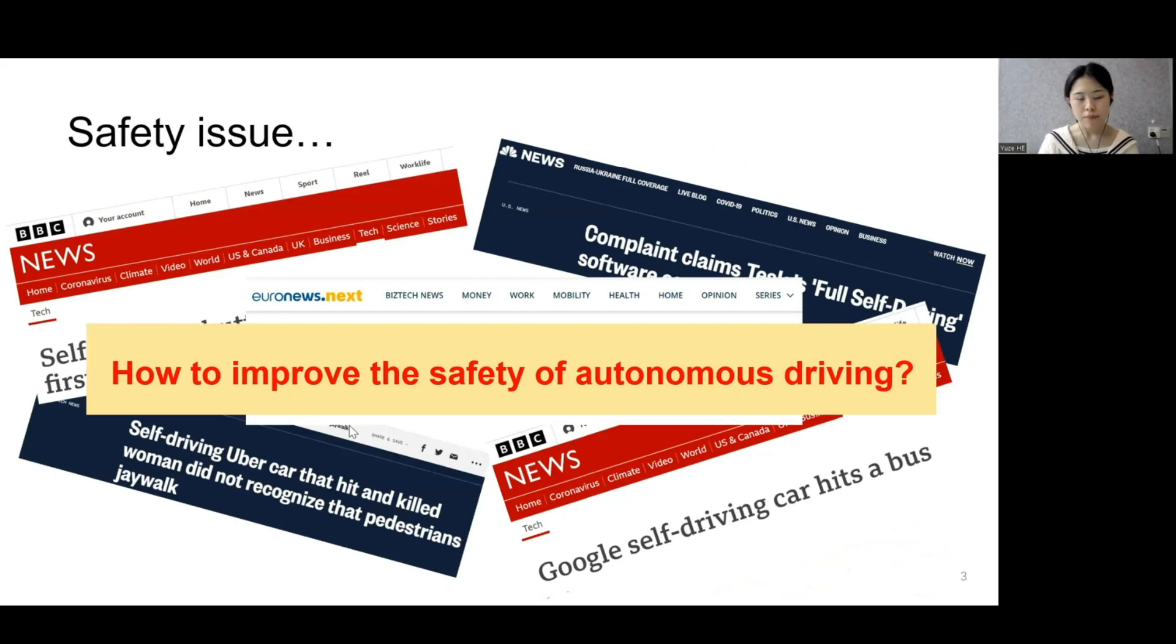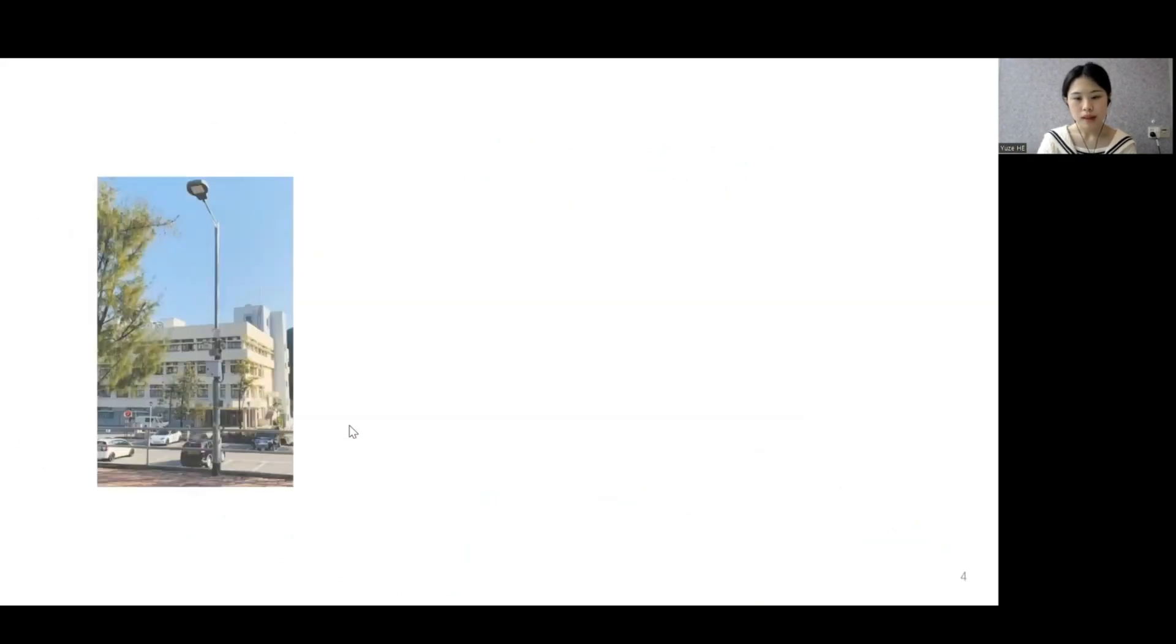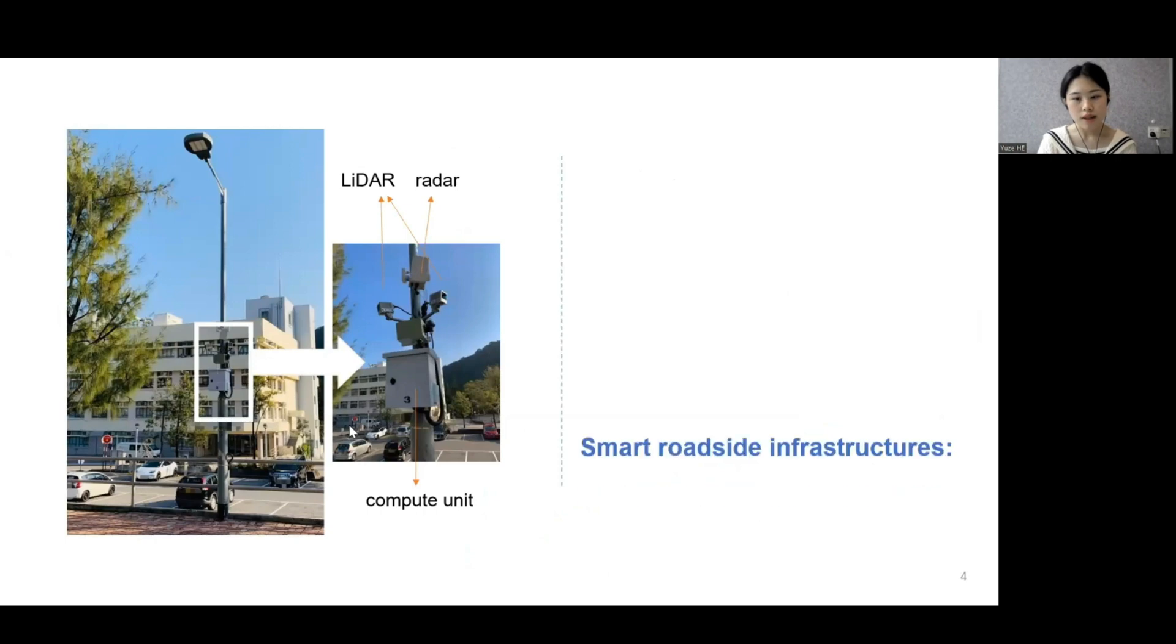A promising paradigm is to leverage smart roadside infrastructure to assist autonomous vehicles' perception. An example of such infrastructure is smart lamppost. Here shows a picture of the smart lamppost testbed we deployed on CUHK campus.